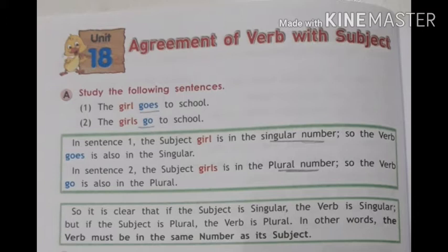Look at the slide. Study the following sentences: number one, 'The girl goes to school'; number two, 'The girls go to school.' Here we can see the words 'goes' and 'go.' There is a difference in the two sentences. In sentence one, the subject 'girl' is in the singular number, so the verb 'goes' is also singular. In sentence two, the subject 'girls' is plural, so the verb 'go' is also plural.